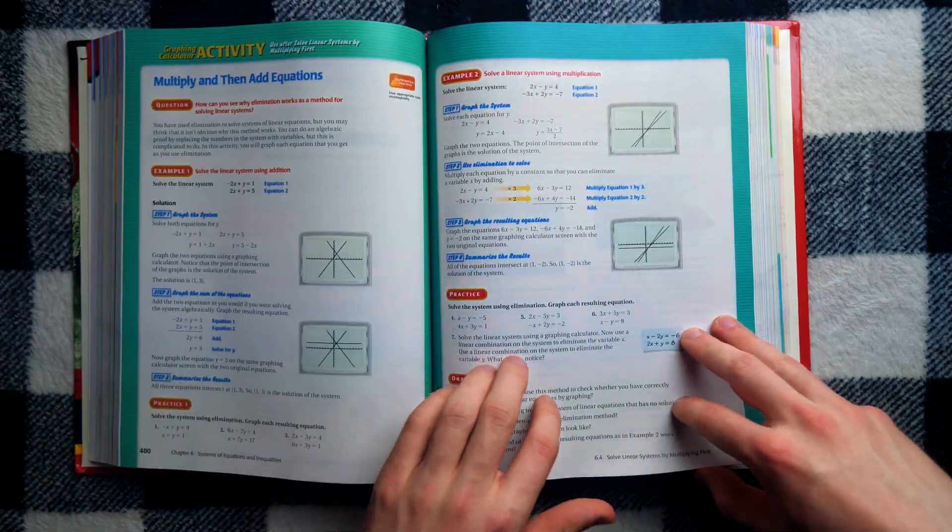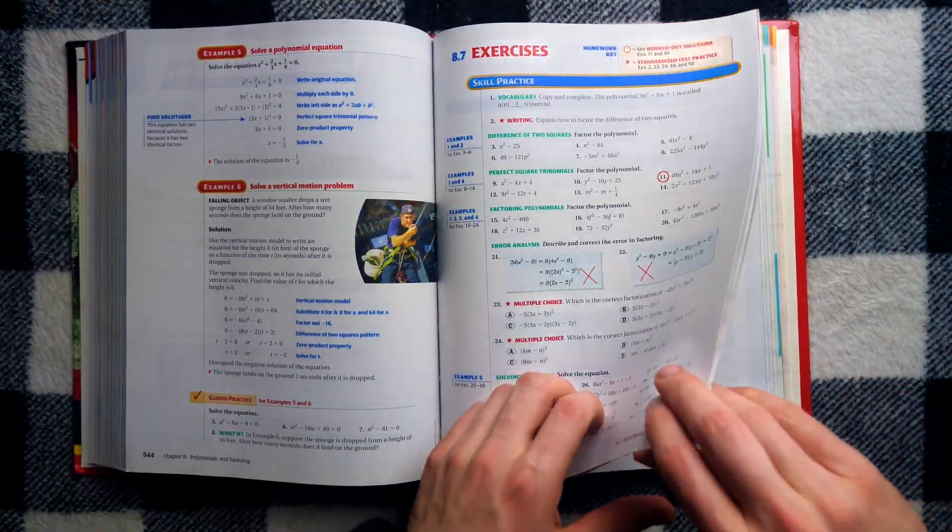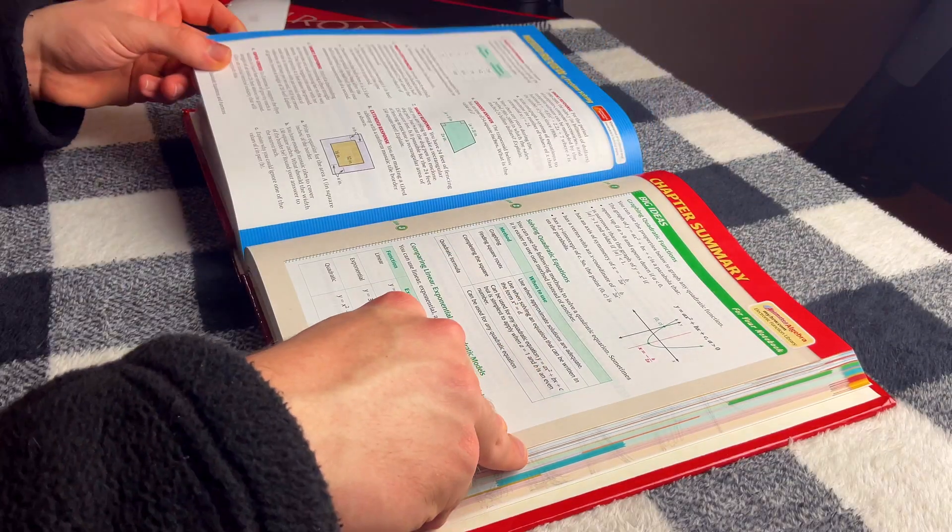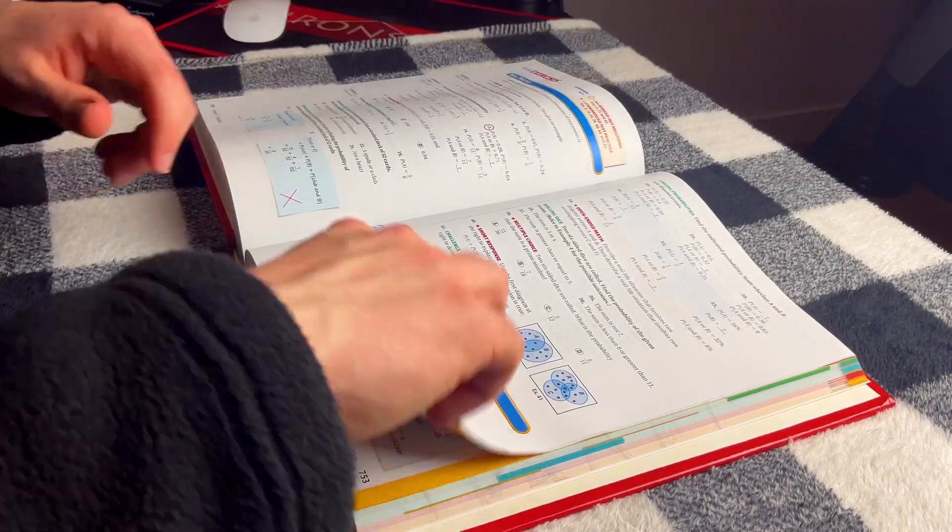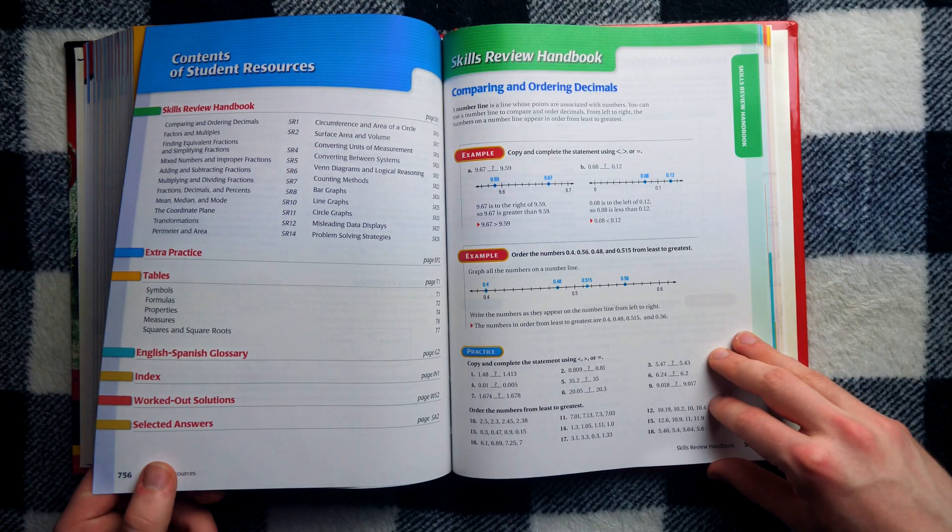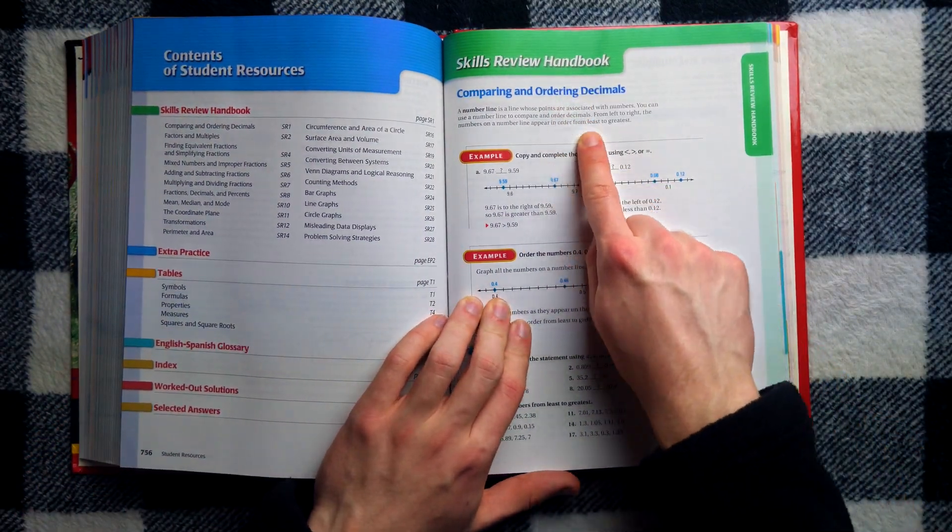This is a behemoth, but you get all the way to the end of the book. You think it's over, right? What's at the end of the book? I got selected answers, probably. Got the index. Oh, no, baby. You got the post game. That's what you've got at the end of this bad boy. Look at this. Skills review handbook.